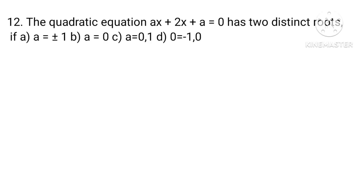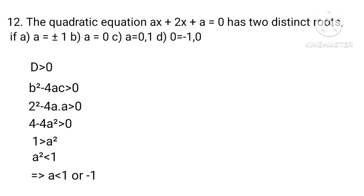For distinct roots, D greater than 0. B squared minus 4AC greater than 0. 2 squared minus 4 times A times A greater than 0. 4 minus 4A squared greater than 0, means 1 greater than A squared, that is A squared less than 1. Implied that A less than plus 1 or minus 1. Hence A equals 0.